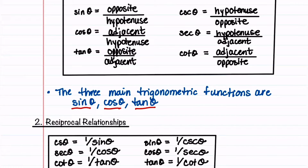We typically find sine, cosine, and tangent first, and then use those functions to find cosecant, secant, and cotangent.